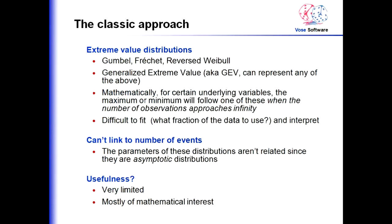The classical approach is using extreme value theory. There are well-known extreme value distributions — you'll find most of them in our software ModelRisk. There's the Gumbel, the Fréchet, the reverse Weibull distribution — these are all examples of something called the Generalized Extreme Value, or GEV, distribution. This seems like it could be rather useful, but it's really a mathematical tool.